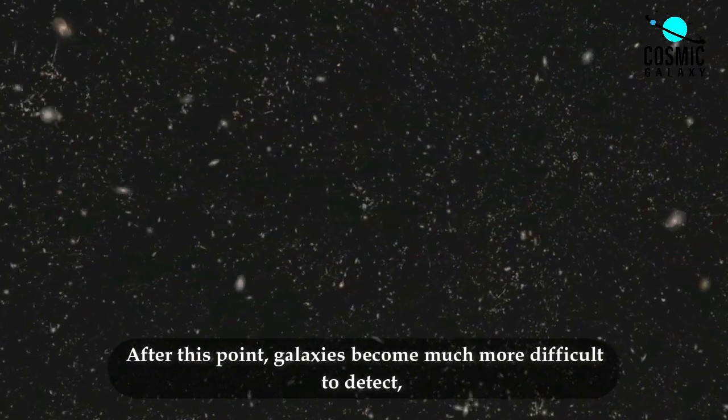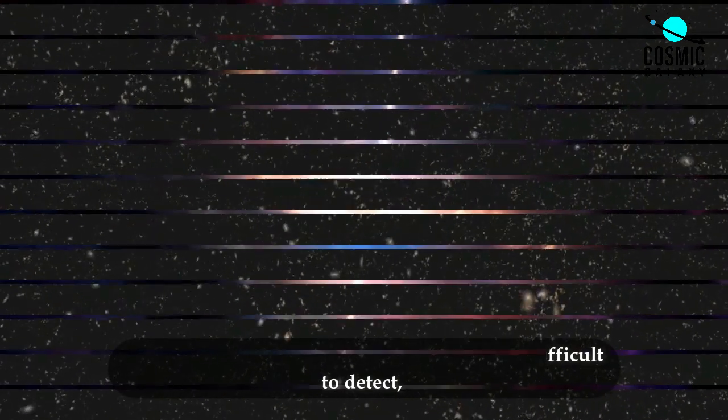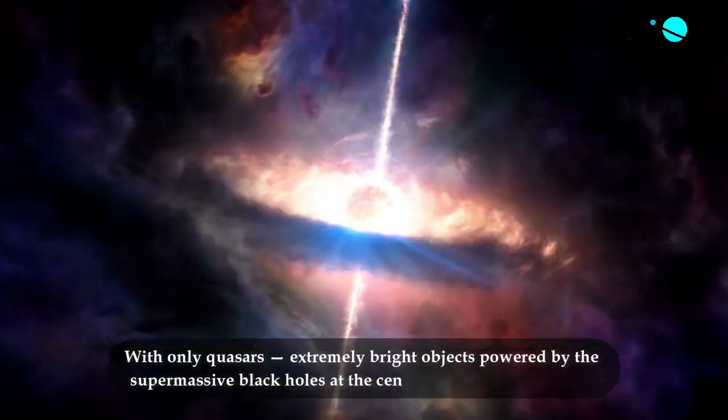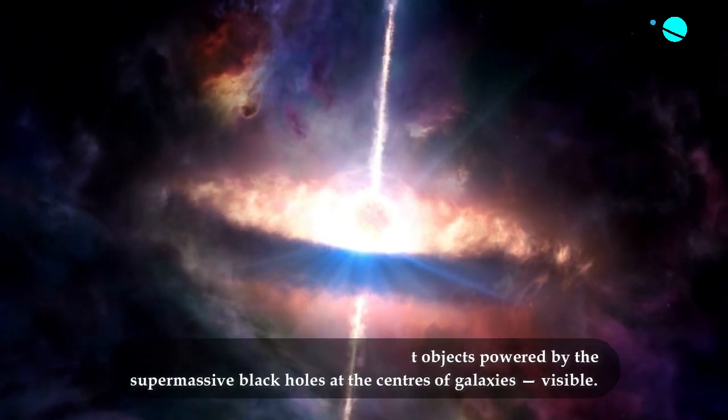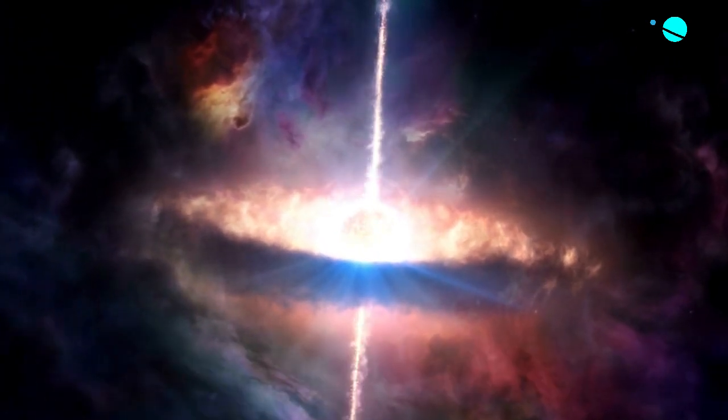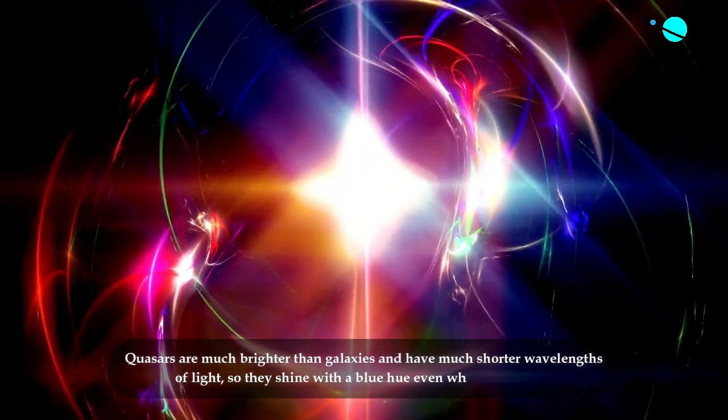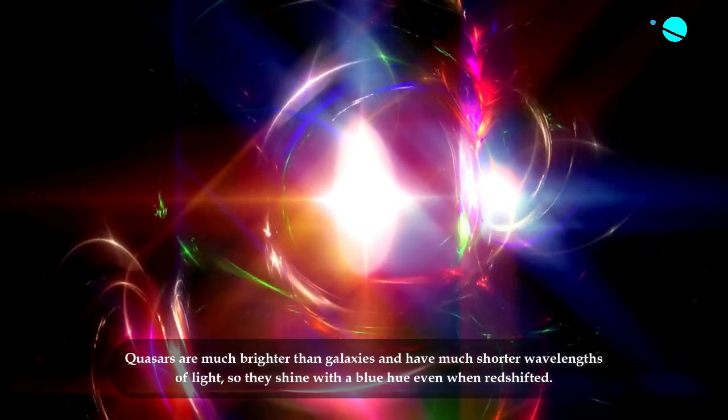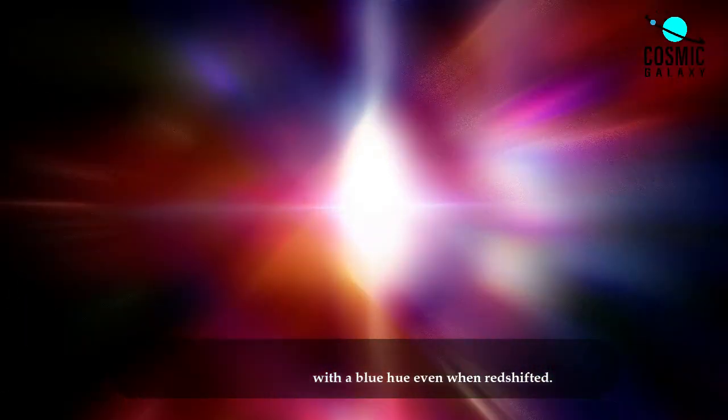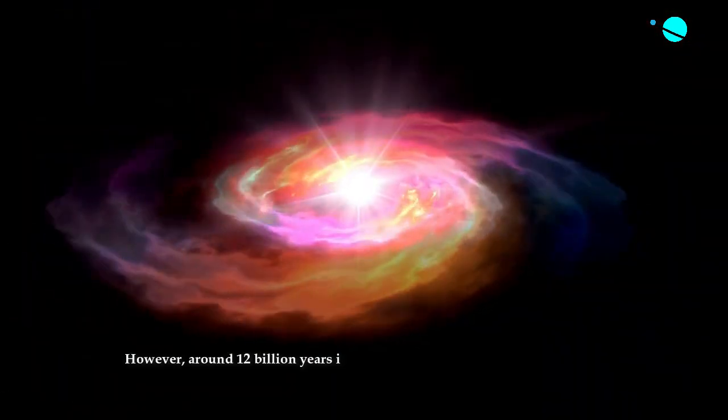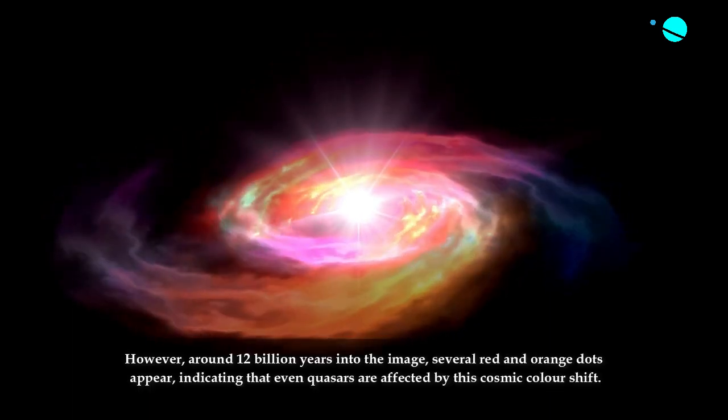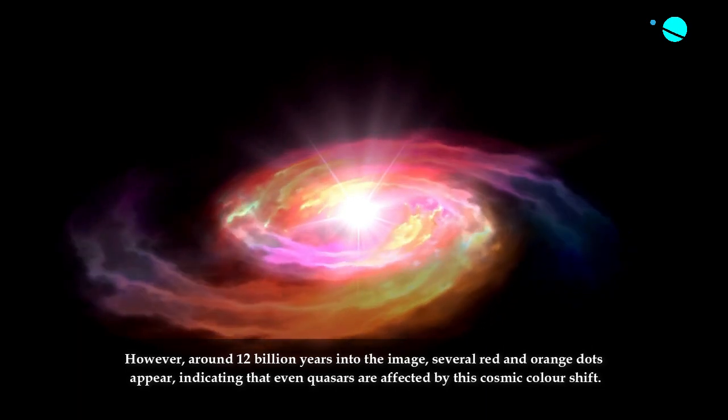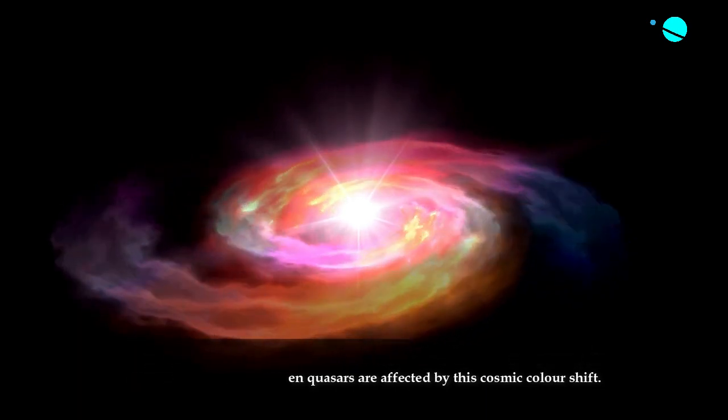After this point, galaxies become much more difficult to detect, with only quasars, extremely bright objects powered by the supermassive black holes at the centers of galaxies visible. Quasars are much brighter than galaxies, and have much shorter wavelengths of light, so they shine with a blue hue even when redshifted. However, around 12 billion years into the image, several red and orange dots appear, indicating that even quasars are affected by this cosmic color shift.